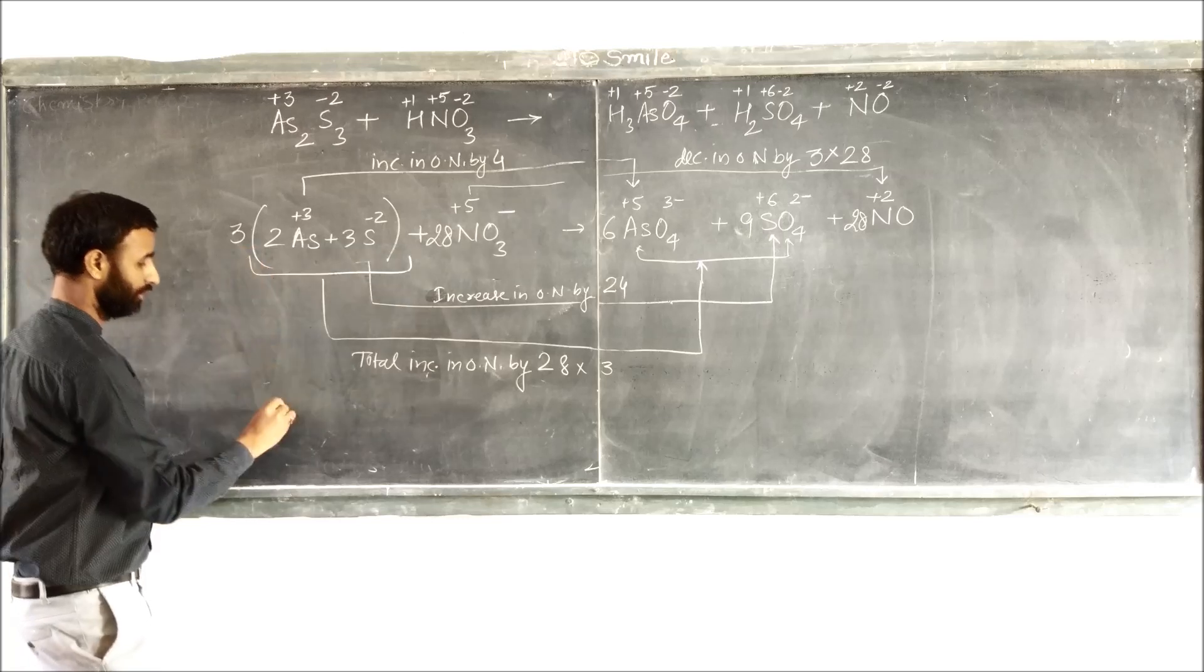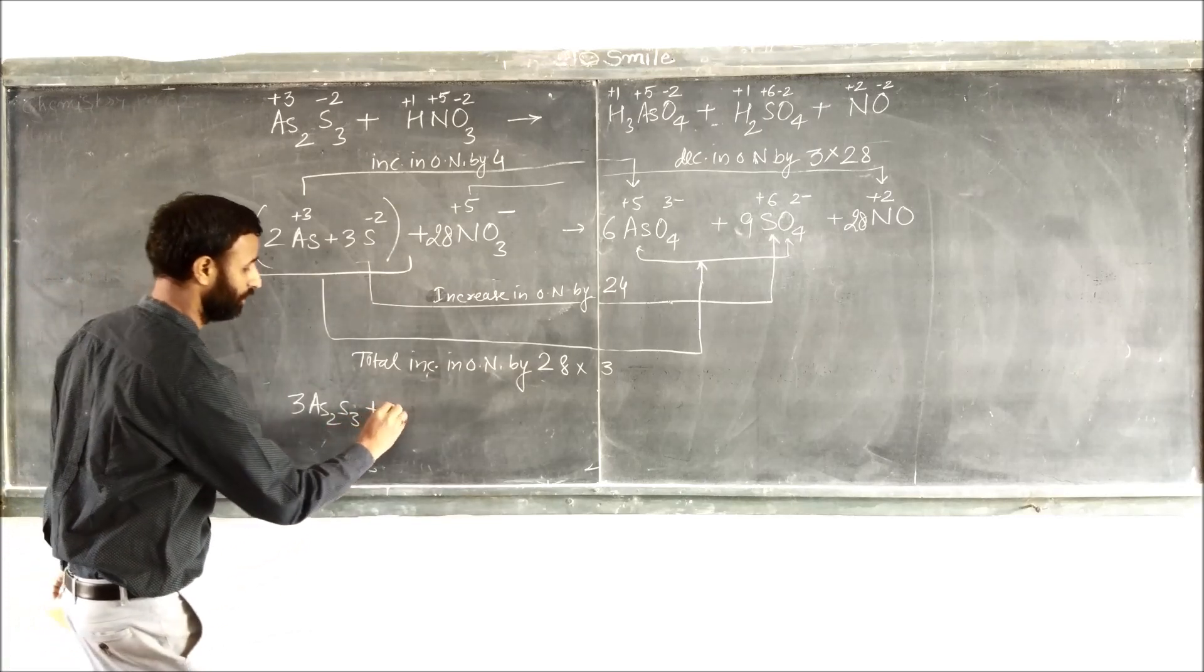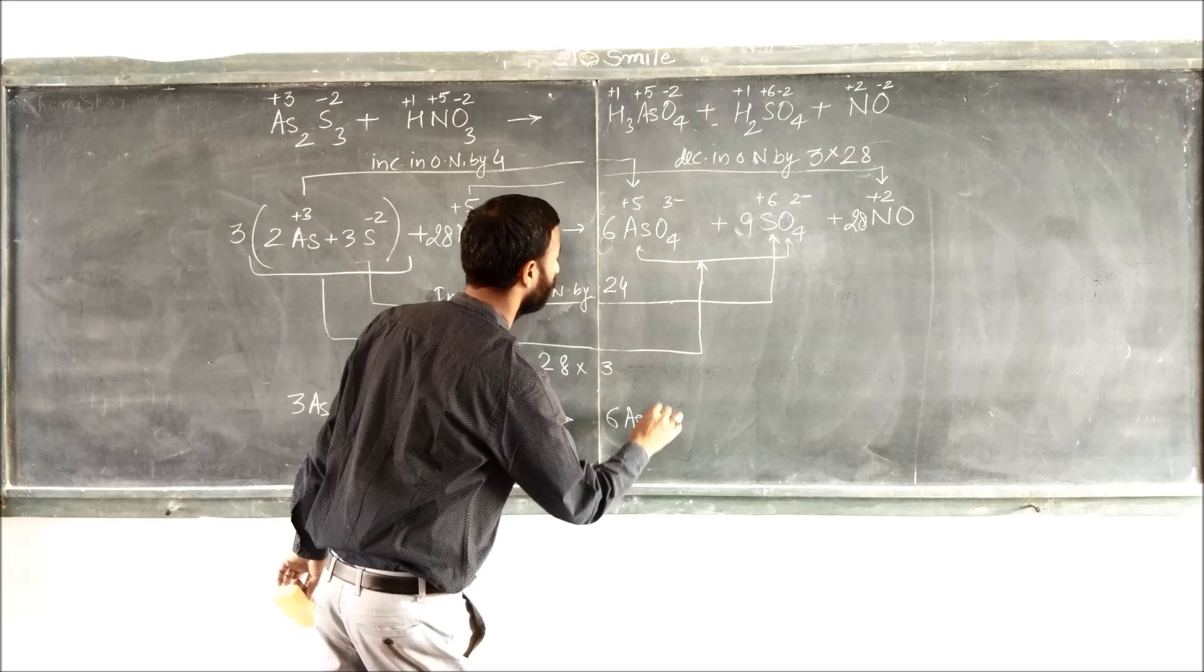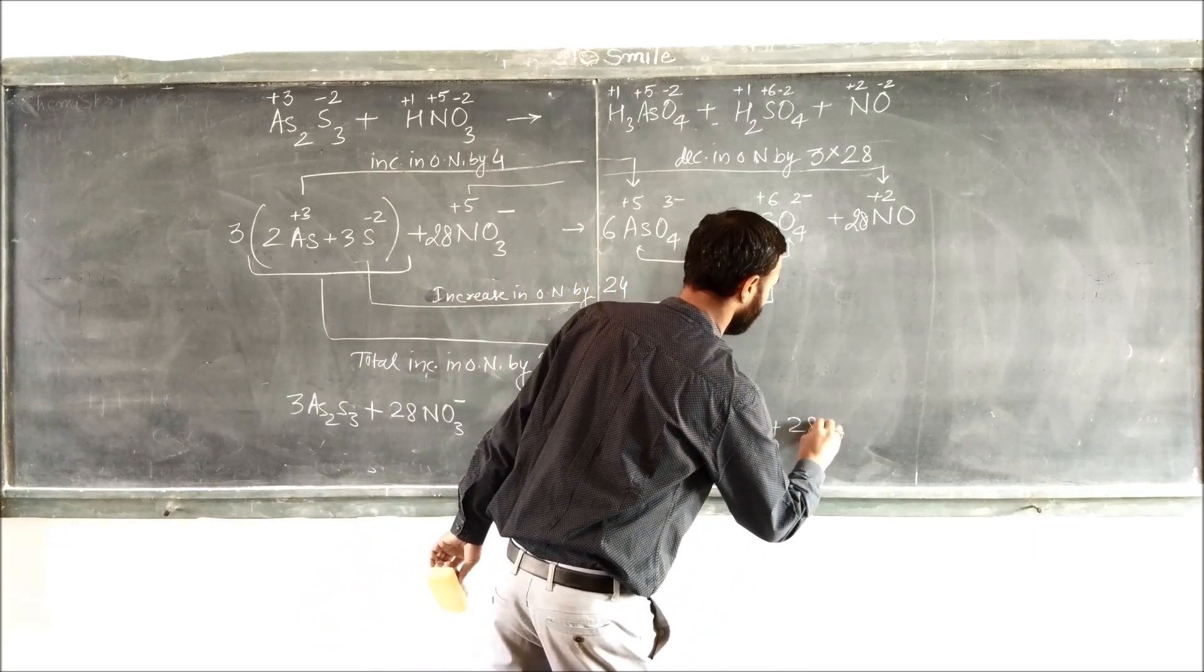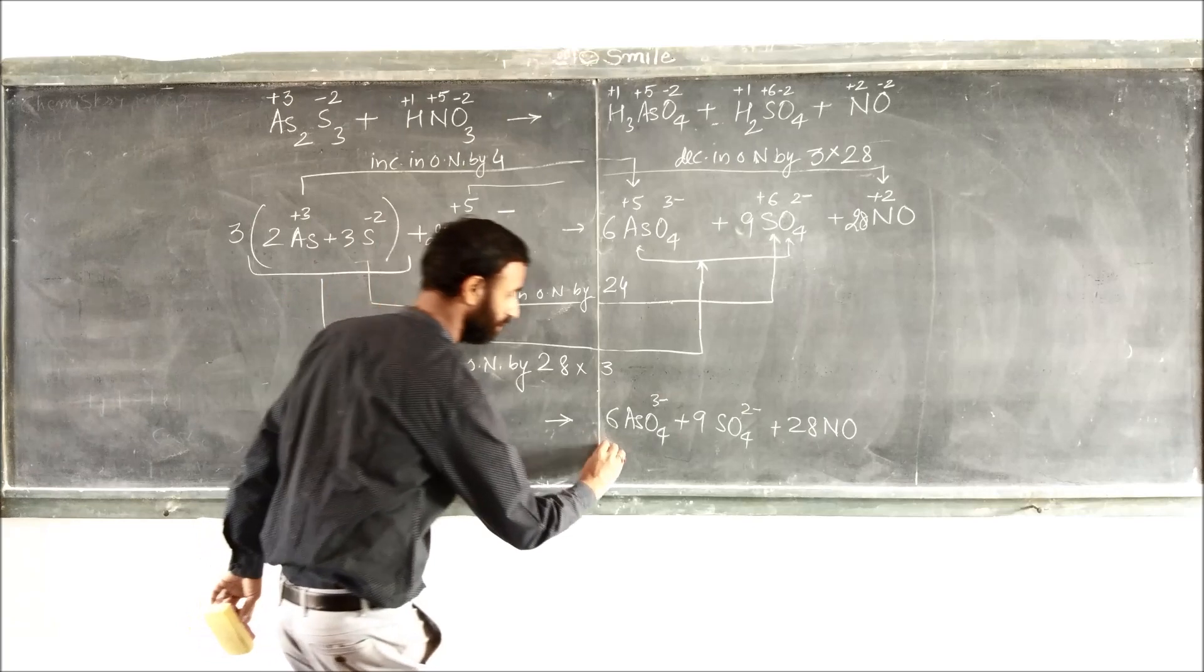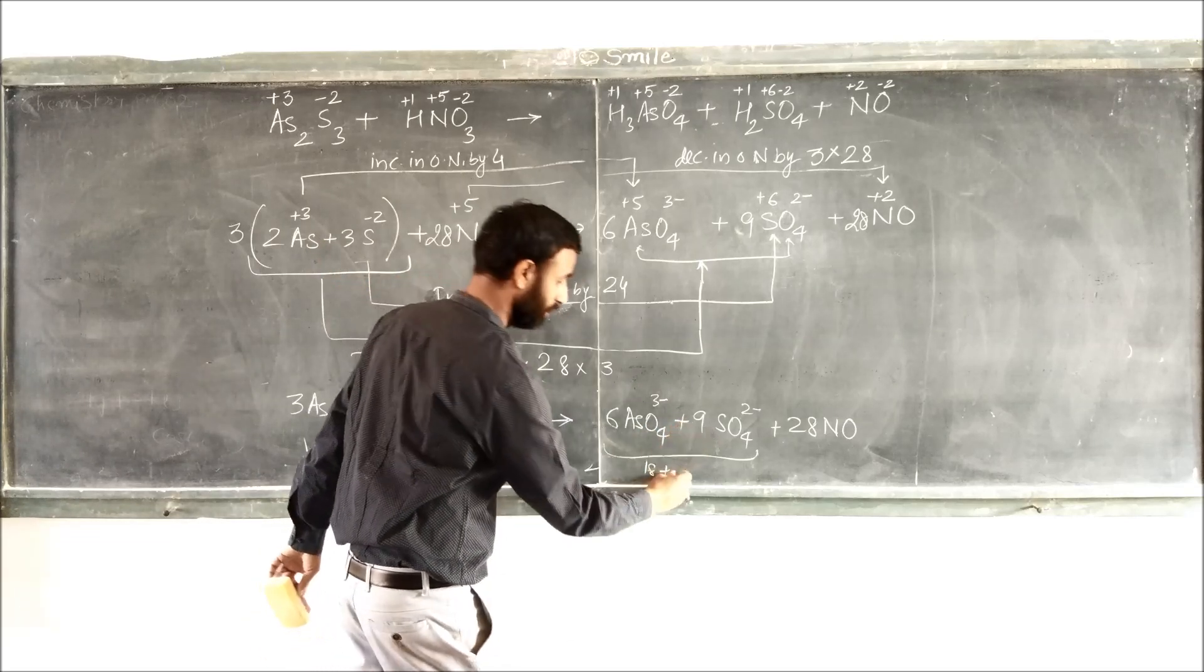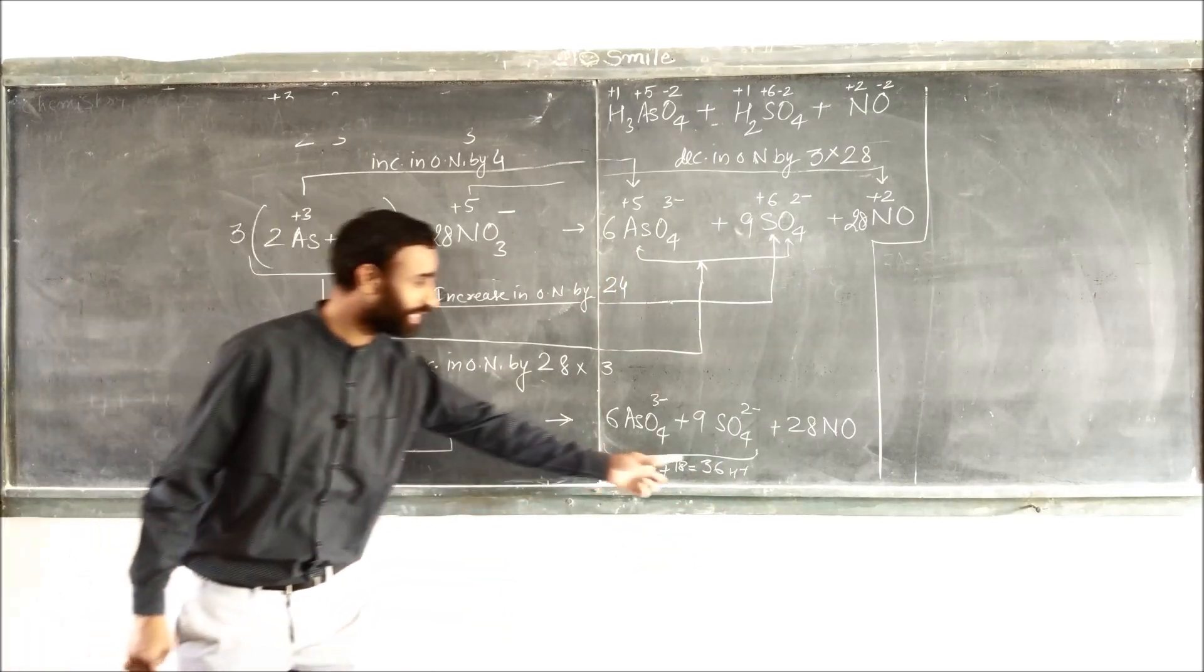Now write it separately. 3 As2S3 plus 28 NO3 minus. Look here: 6 H3AsO4 3 minus, 9 H2SO4 2 minus, plus 28 NO. Here we have to add 28 As plus on the other side. 6 into 3 is 18, plus 18 is 36. So 28 H plus, or 36 H plus on the other side.